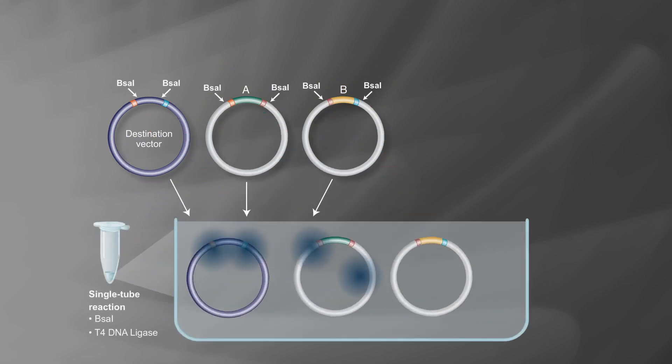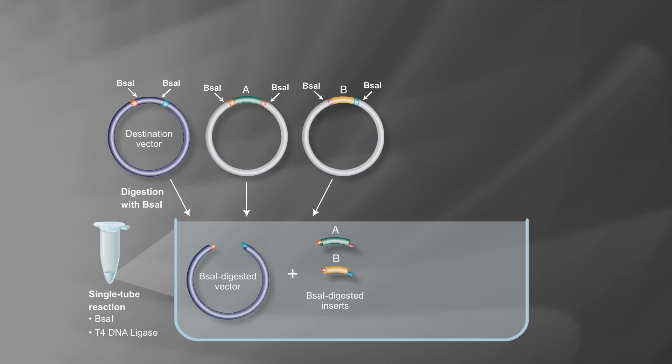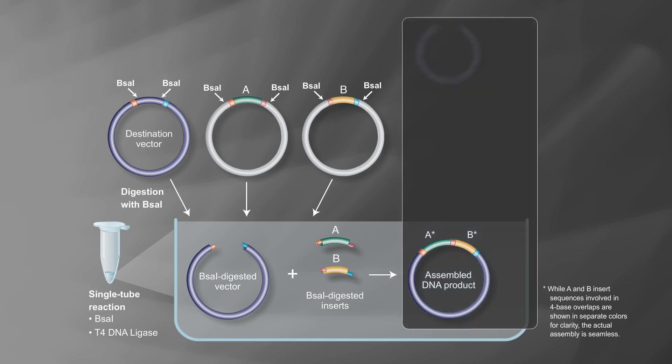Insert fragments can also be precloned into plasmids flanked by BSA1 sites. During assembly, inserts in vector will ligate to yield the final assembled product, which lacks BSA1 sites. Again, only the plasmids with the correct insertion will remain intact and ready for transformation.